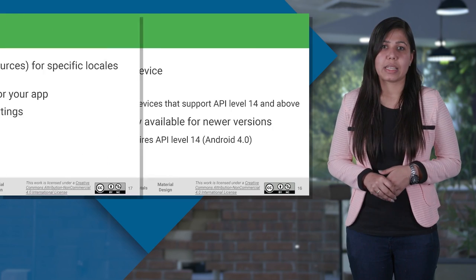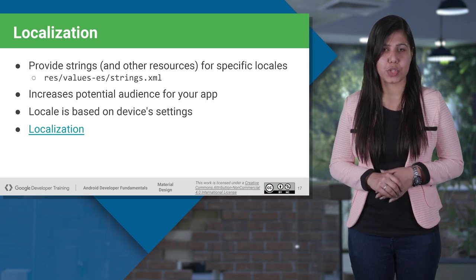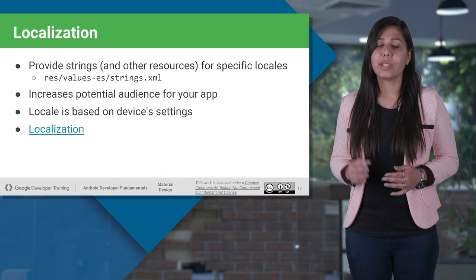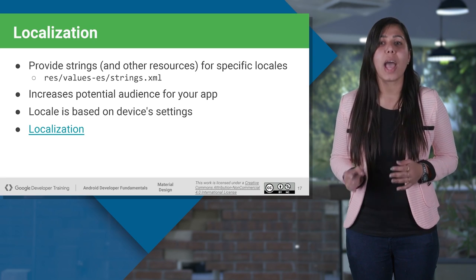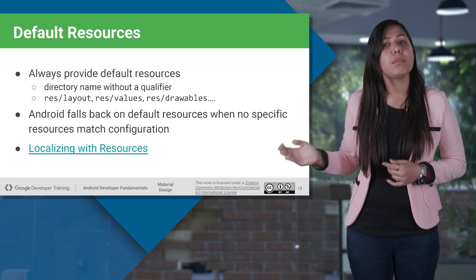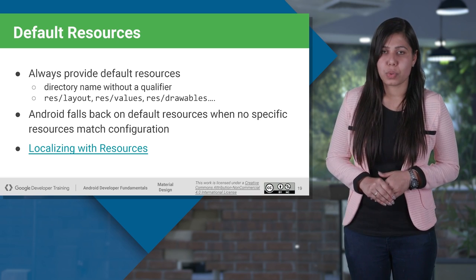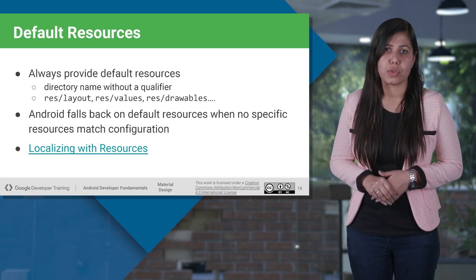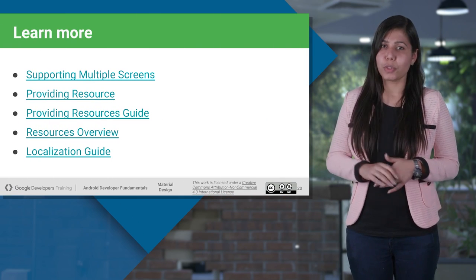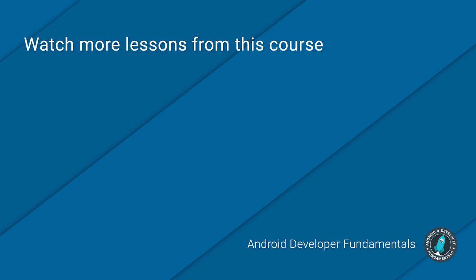Feel free to check out more from the provided link. Your users might be from all around the globe, so you should support various locales. For this, we have localization. In this example, we are adding string resources for the Spanish language, so for all the strings you define in your application, you add an alternative locale string resource. Search more about it through the link given on the slides. It is a good practice to provide default resources, which Android falls back on when no specific resource matches the current device configuration. Feel free to learn more from these links and go over the following practical to give adaptive layout a shot. Happy learning.